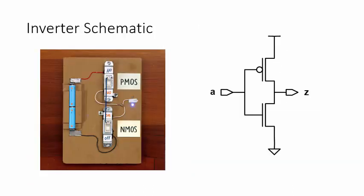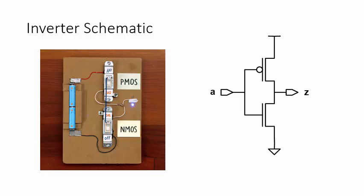This is the schematic of the inverter. The PMOS transistor is connected between the power supply and the output, and the NMOS transistor is connected between the output and ground. The two connected gates are the inverter input,